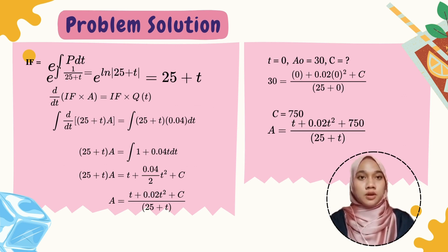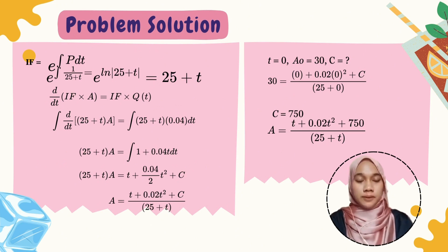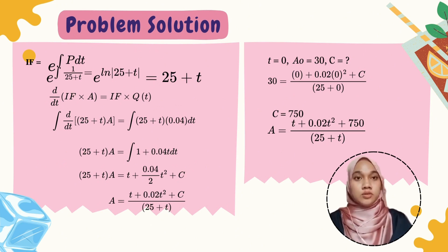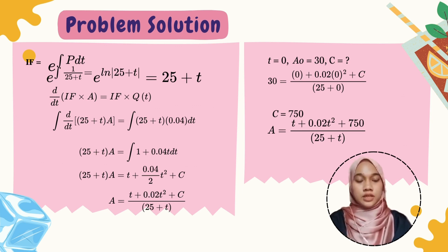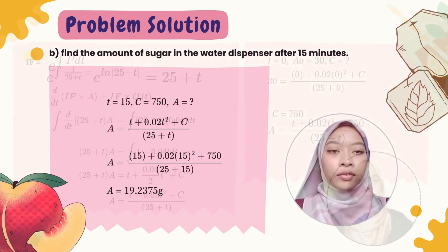To find C, we use t equals 0 and the initial amount of syrup solution equals 30 grams. Substituting A(0) = 30 into the equation gives C equals 750. Substituting back, the final equation is: A equals (t + 0.02t² + 750) divided by (25 + t).